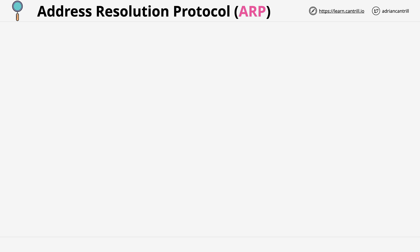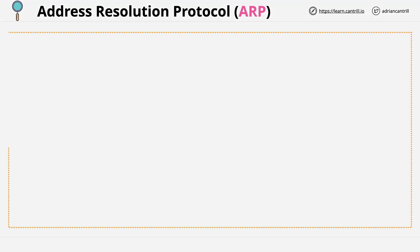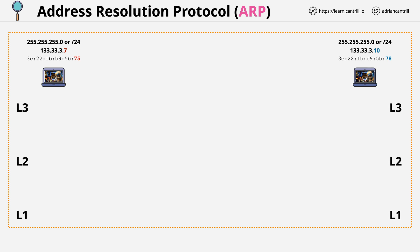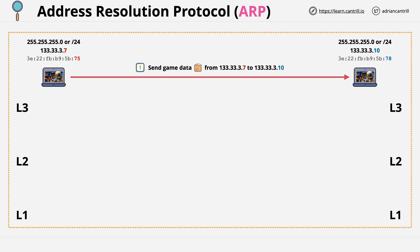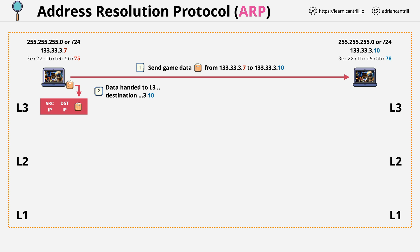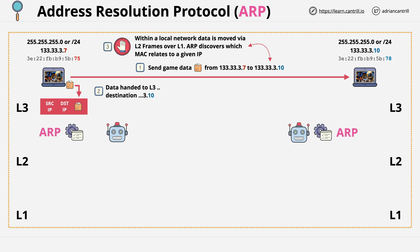So let's step through how it works. For this example, I'm going to keep things simple. We've got a local network with two laptops, one on the left and one on the right, and this is a layer 3 network, which means it has a functional layer 2 and layer 1. What we want is the left laptop, which is running a game, and it wants to send packets containing game data to the laptop on the right. This laptop has an IP address of 133.33.3.10. So the laptop on the left takes the game data and passes it to its layer 3, which creates a packet. This packet has its IP address as the source and the right laptop as the destination — 133.33.3.10. But now we need a way of being able to generate a frame to put that packet in for transmission. We need the MAC address of the right laptop. This is what ARP, or the Address Resolution Protocol, does for us. It's a process which runs between layer 2 and layer 3.